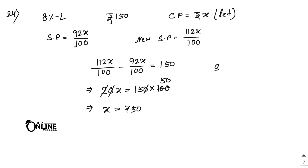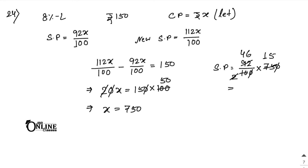Now find the selling price: SP equals 92 by 100 into 750. Cancelling zeros and simplifying: 46 into 15 equals 690. So 690 is your SP.